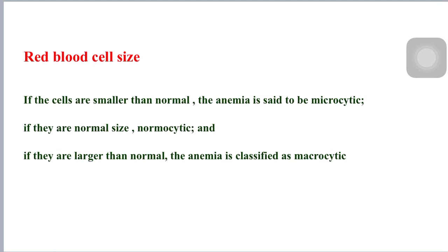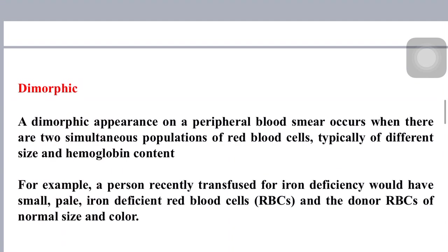Coming to types according to red blood cell morphology: in the morphological approach, anemia is classified by the size of red blood cells, either done automatically or on microscopic examination of a peripheral blood smear. If the cells are smaller than normal, the anemia is said to be microcytic; if they are normal size, normocytic; and if they are larger than normal, the anemia is classified as macrocytic.